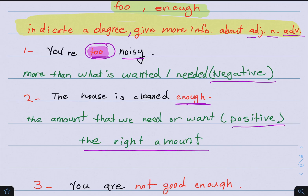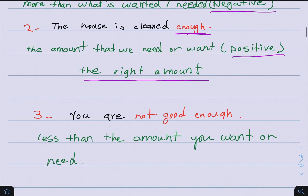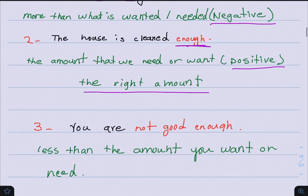As for 'enough': The house is cleaned enough. 'Enough' means the amount that we need or want — the right amount. It usually comes in a positive meaning. For example: I am good enough. The negative form: You are not good enough — this means less than the amount you want or need.